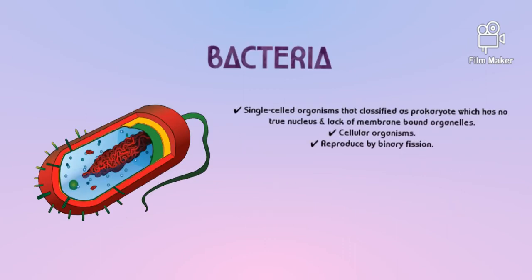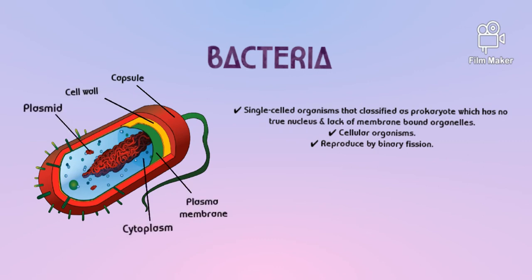Bacteria are single-celled organisms classified as prokaryotes, which have no true nucleus and lack membrane-bound organelles. However, bacteria have other cellular structures like capsule, cell wall, plasma membrane, cytoplasm, plasmid, pili, ribosome, nucleoid, and flagella.